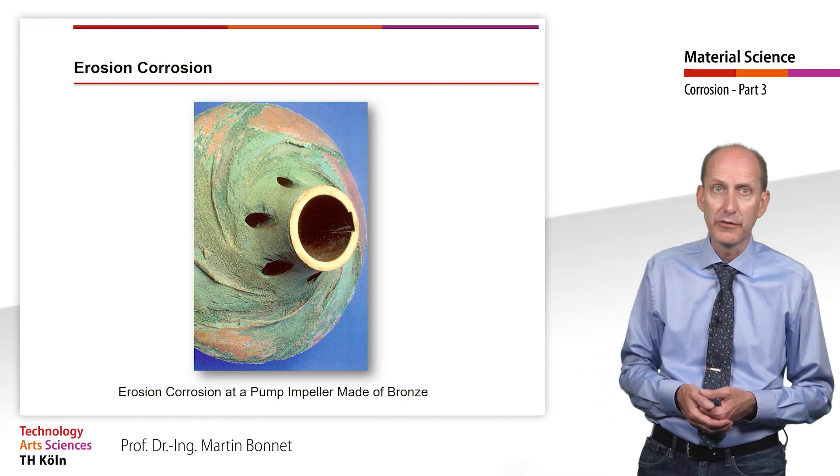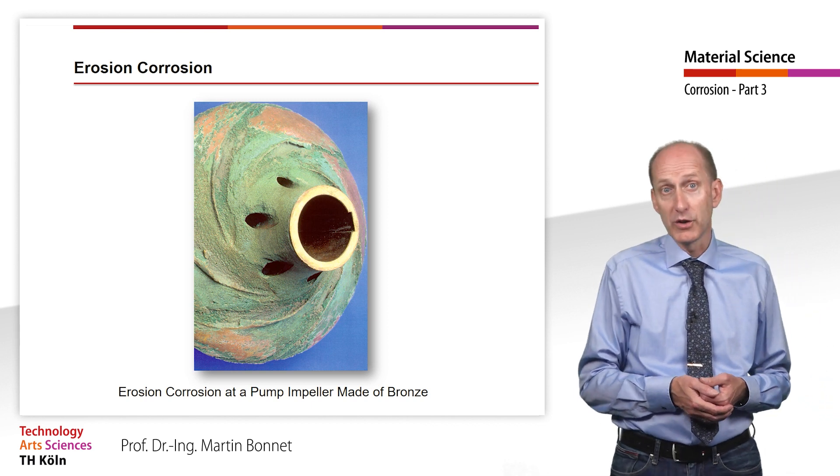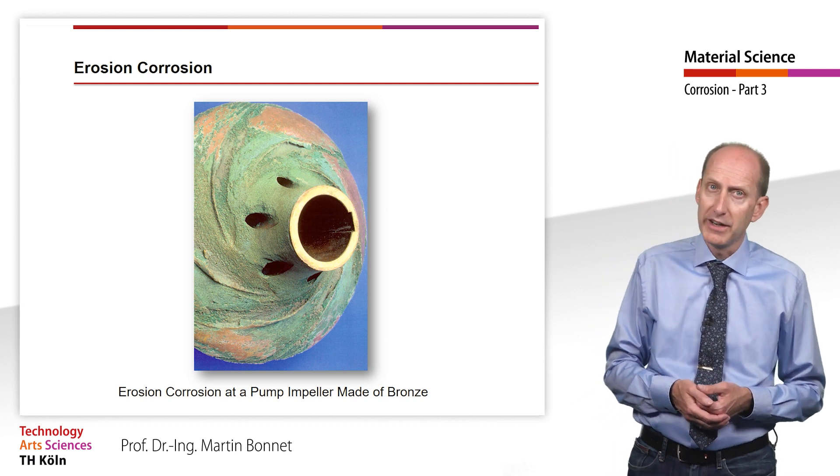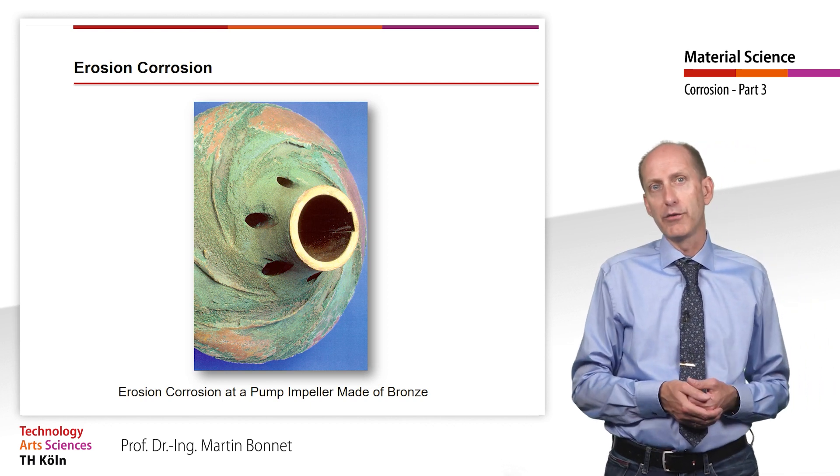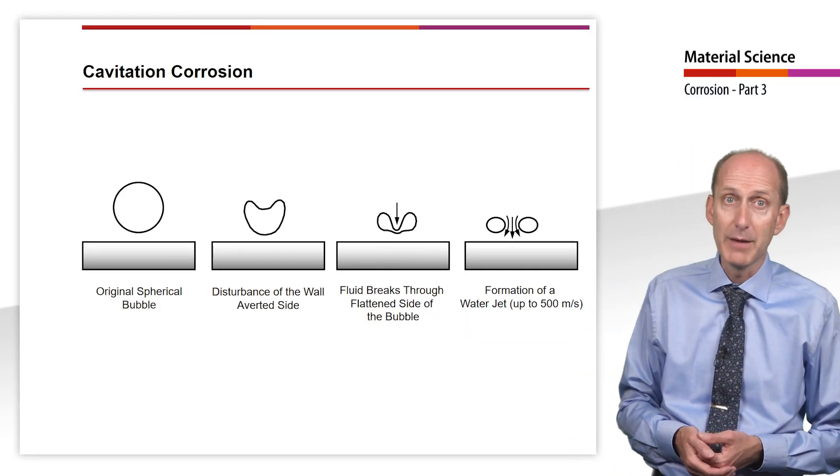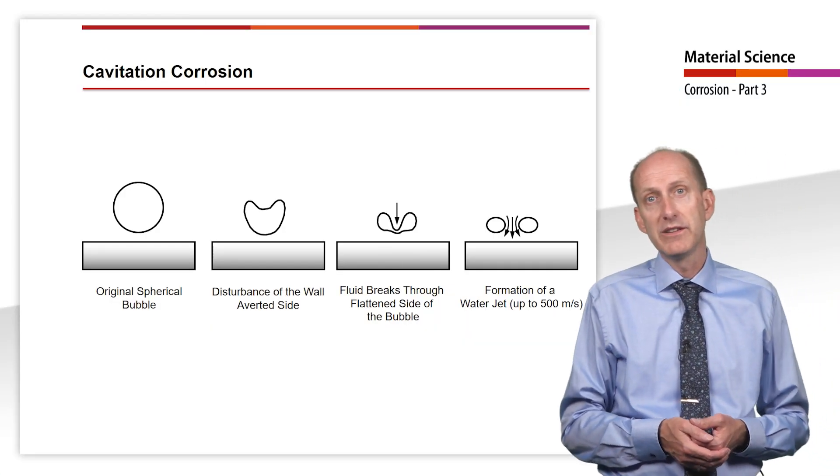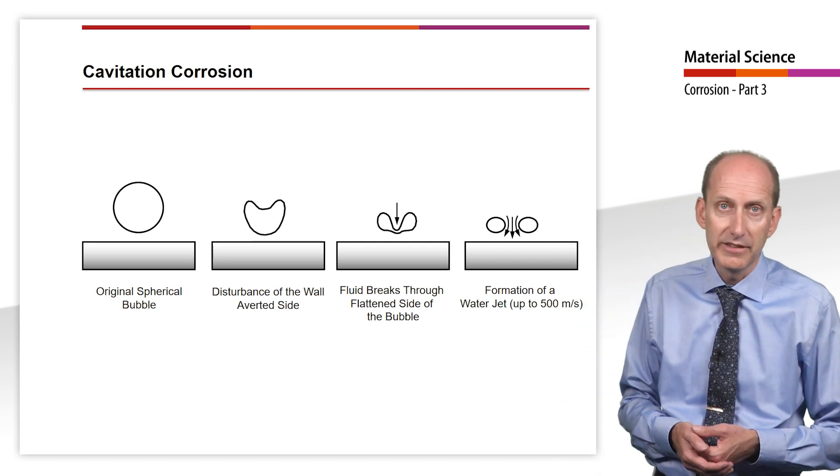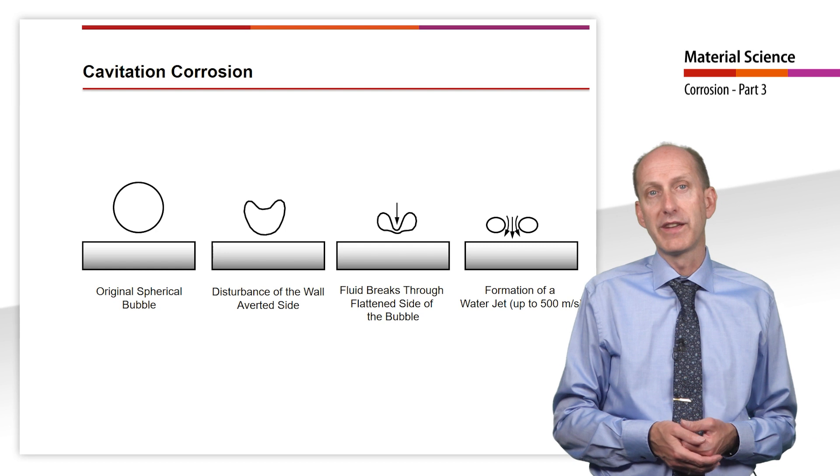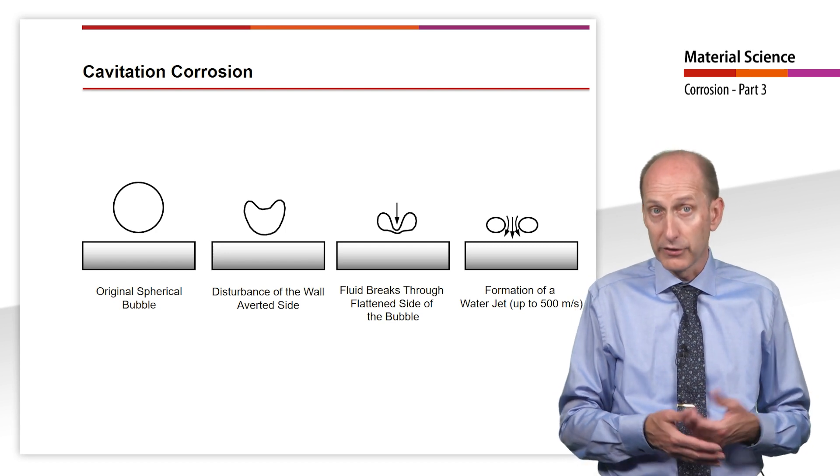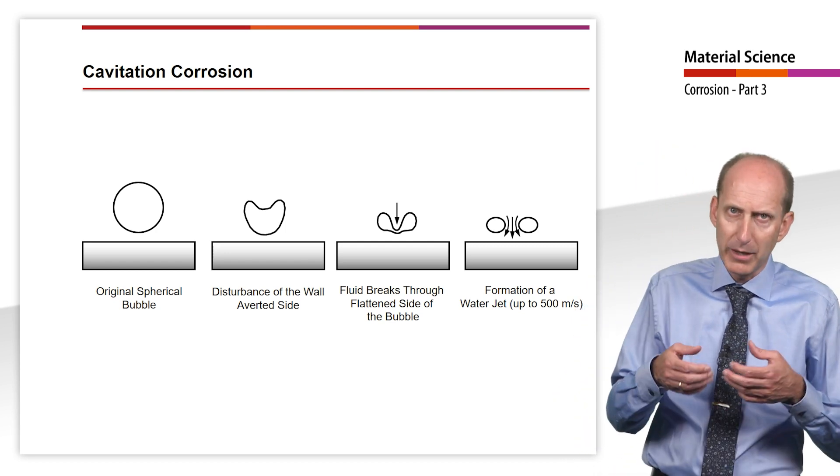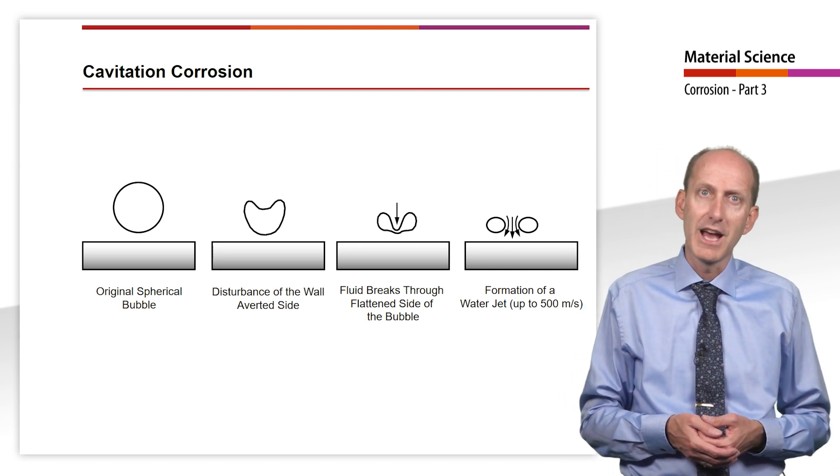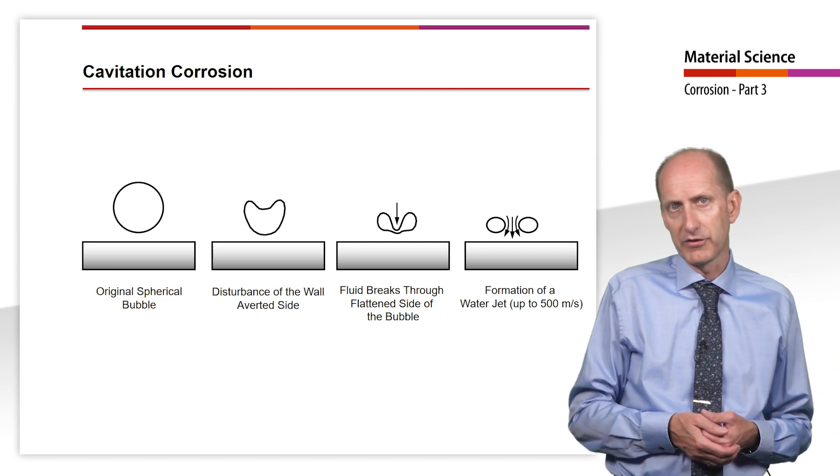In this picture we see an affected pump impeller, which was made of bronze. After a short period of time, there is already very little left of the guide veins. Another interesting type of flow induced corrosion is cavitation corrosion or cavitation erosion. This can occur in the case of gas bubbles in the medium. Under certain flow conditions, the gas bubbles can implode, resulting in short term local flow velocities up to 500 meter per second.